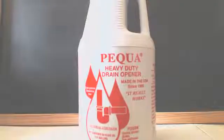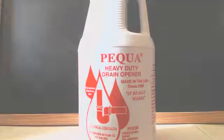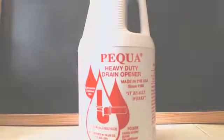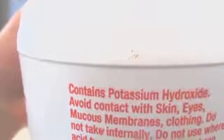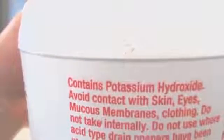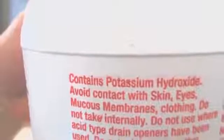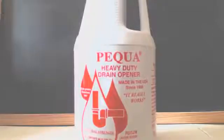Well, this is John Black, super chemist. We're here to make some potassium carbonate. We're going to start out with this Pequa heavy-duty drain cleaner you can get at Lowe's or any hardware store. As you can see from the back, it contains potassium hydroxide.